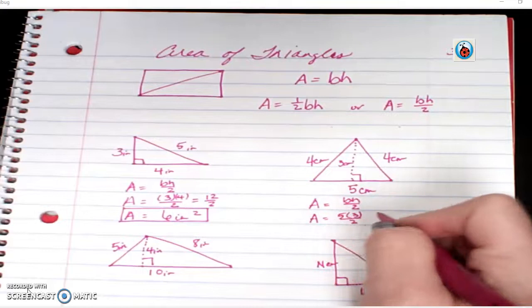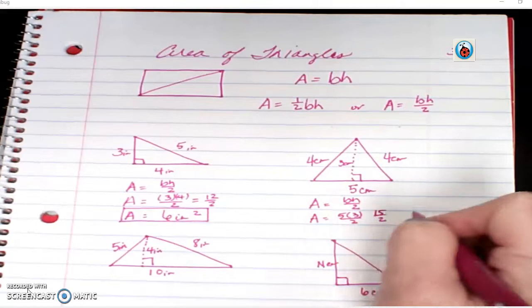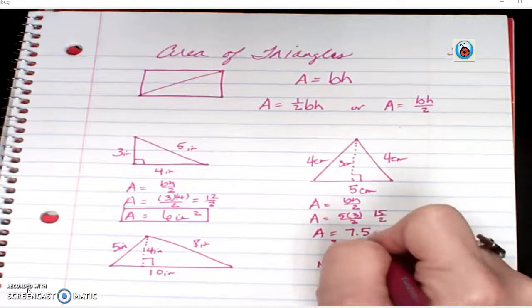Well, five times three is fifteen. Half of fifteen. And area equals seven and a half centimeters squared.